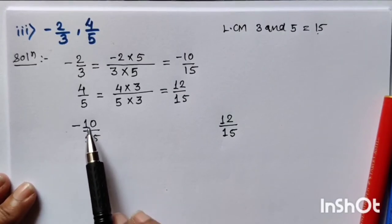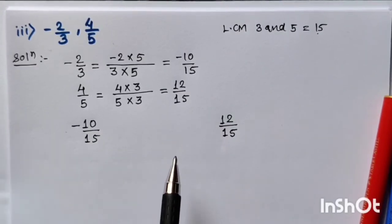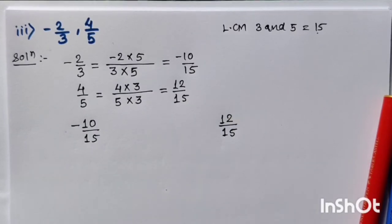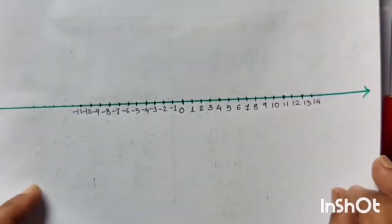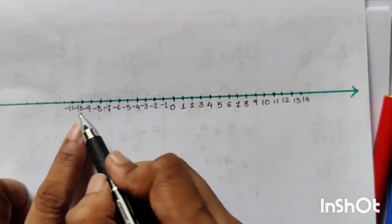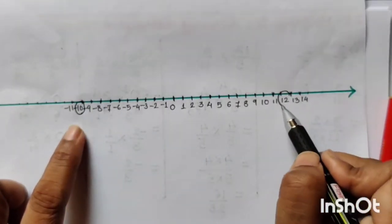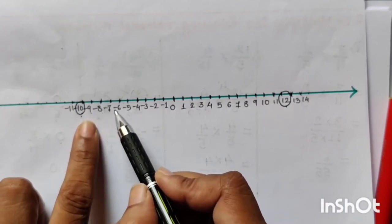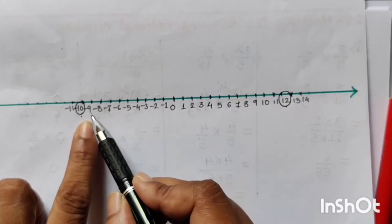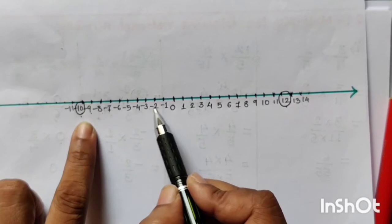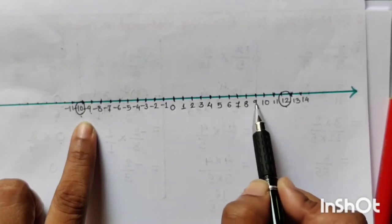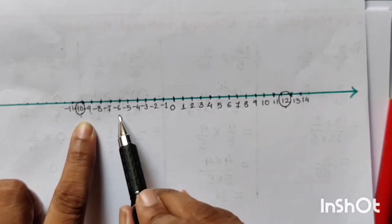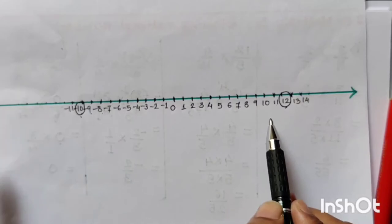We have to write the integers which lie between minus 10 and plus 12. On the number line, minus 10 is here and plus 12 is here. Between minus 10 and plus 12, there are various integers. Minus 9 is bigger than minus 10, minus 8 is bigger than minus 9, and so on. There are 21 integers between minus 10 and plus 12. You can write any 3 integers from those 21.